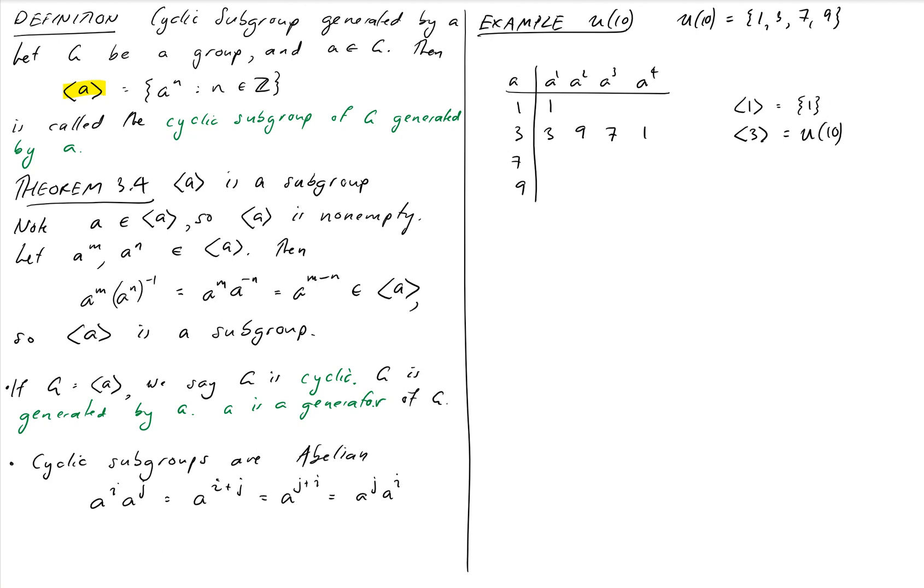Same thing for 7. I'm going to get 7 to the 1 is 7, 7 times 7 is 49 which becomes 9, 7 times 9 is 63 so we'll have 3, and 7 times 3 is 21. So again 7 is also a generator of U of 10.